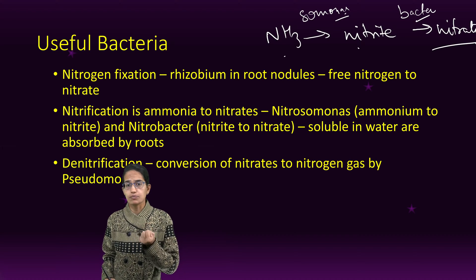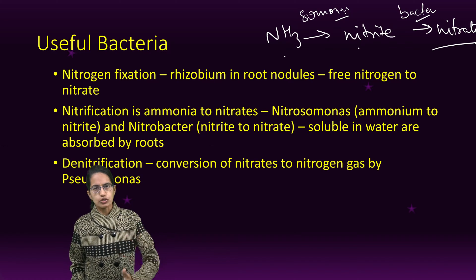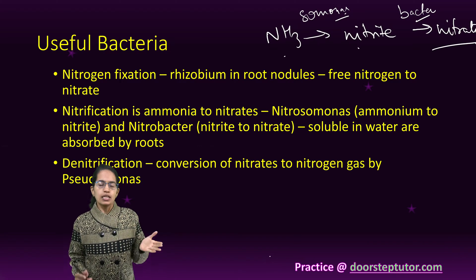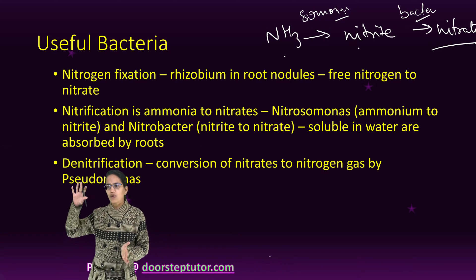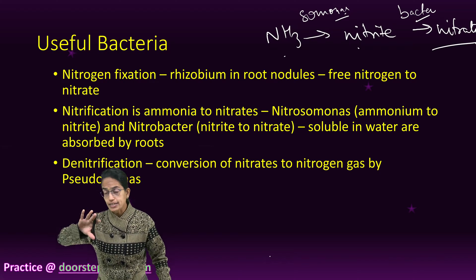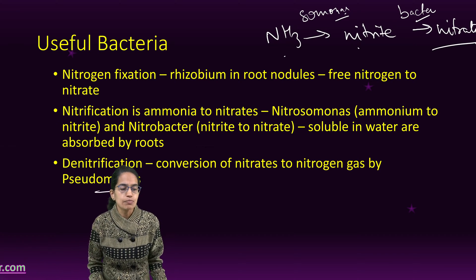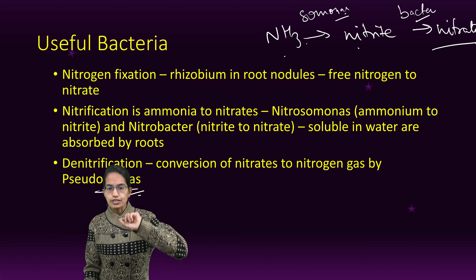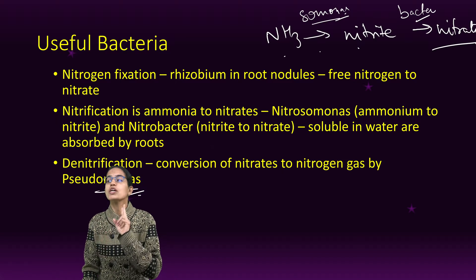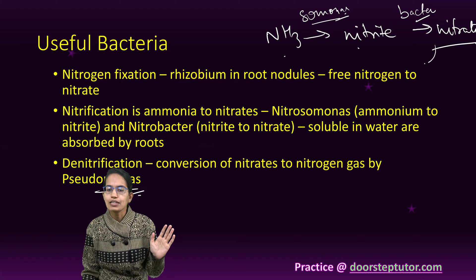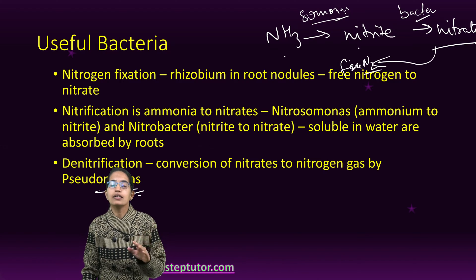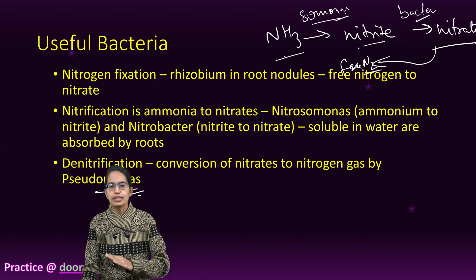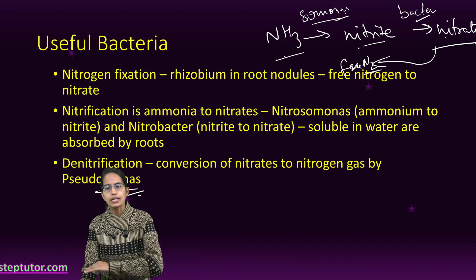Water absorbed by the roots is where the process of nitrification starts. Then there is another process known as denitrification. Denitrification involves conversion of nitrates back into free nitrogen, and this is done by Pseudomonas. So: Nitrosomonas converts ammonia to nitrite; Nitrobacter converts nitrite to nitrate; Pseudomonas is used for denitrification — converting nitrate back to free nitrogen. This is an extremely important and commonly asked question.